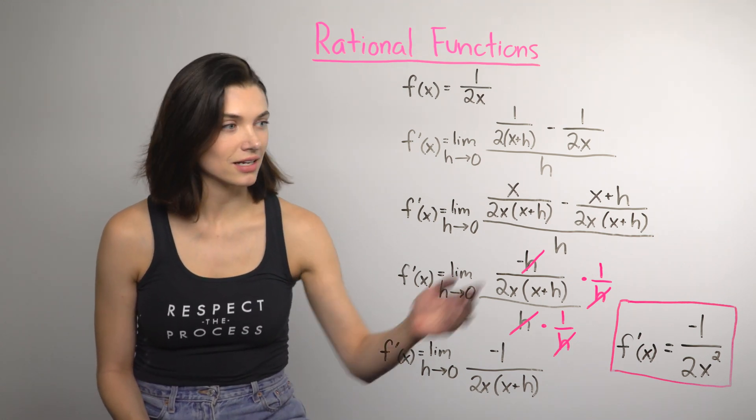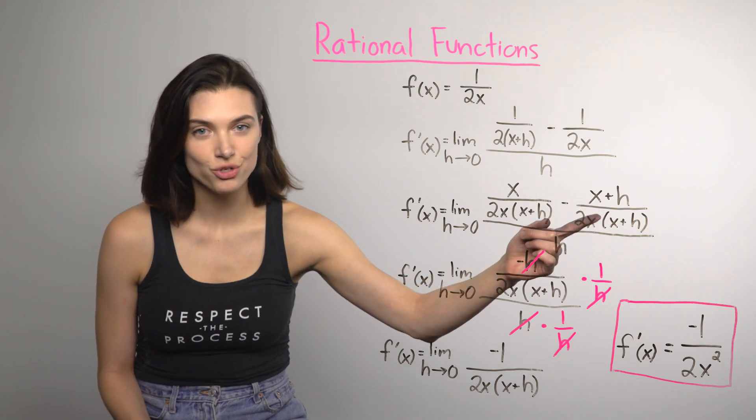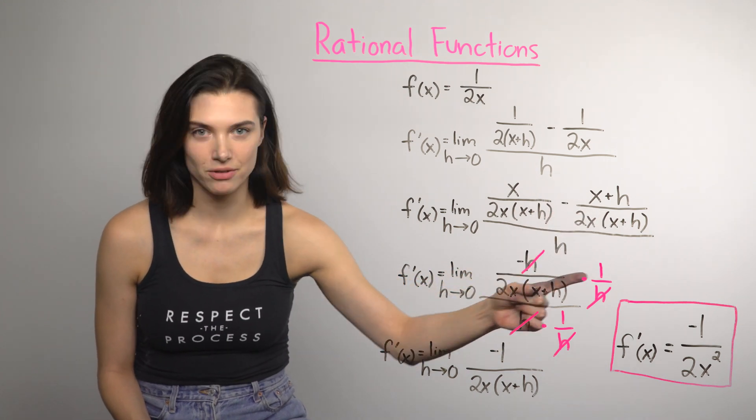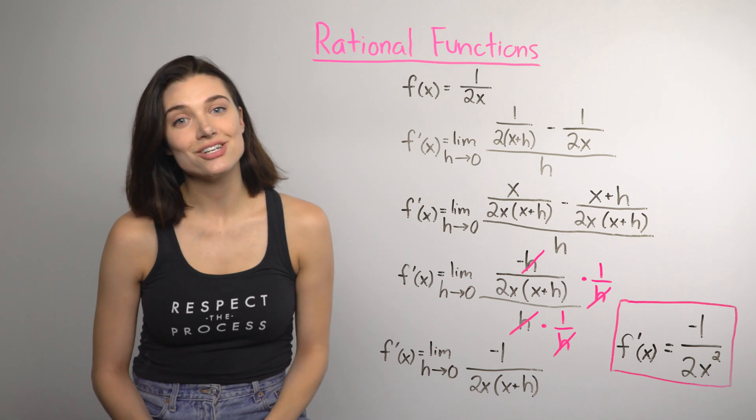So the two real tricks for rational functions are really just finding a common denominator for the fractions in the numerator, and multiplying by the reciprocal to get rid of the h in the denominator.